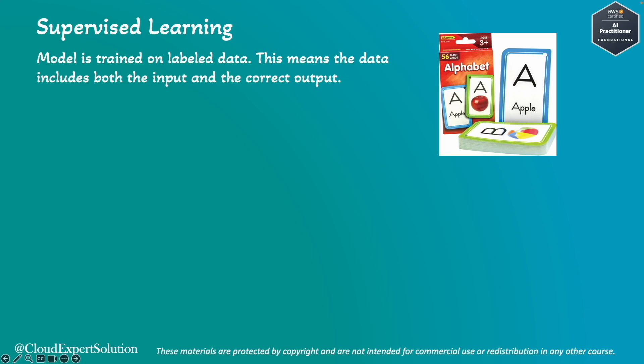We first show the child a card with a picture of an apple and tell him or her that it's an apple. After showing many such labeled cards, the child learns to recognize which is an apple versus other fruits. A similar analogy applies here. Let's understand how supervised learning works by taking an example of creating a machine learning model to recognize spam emails.